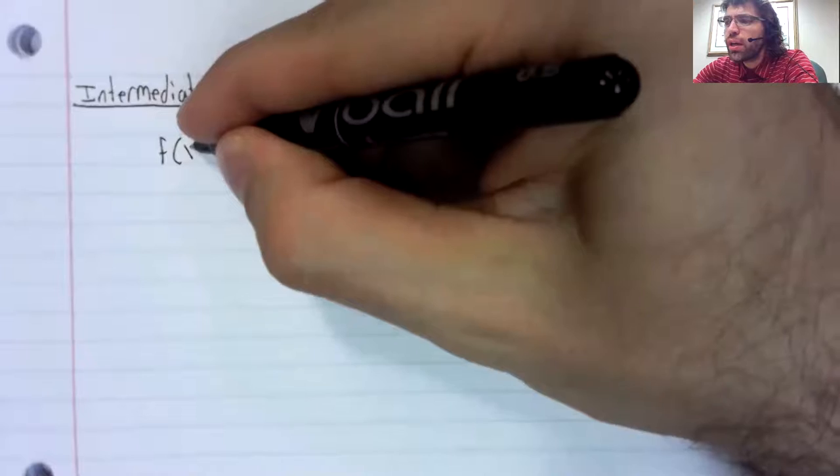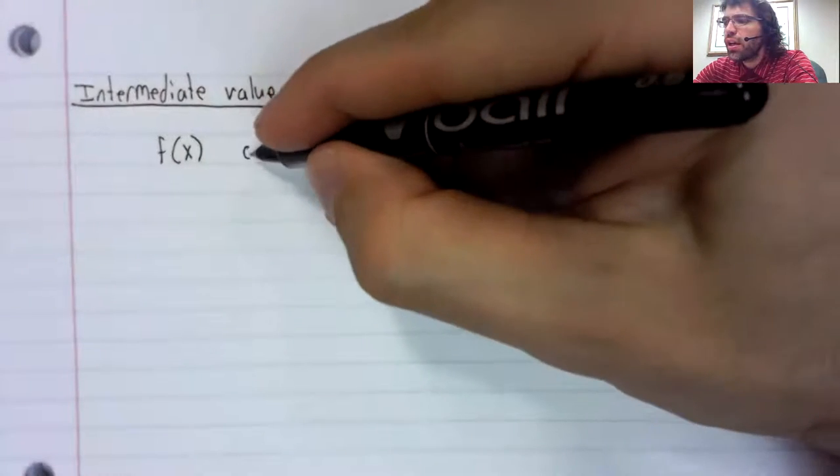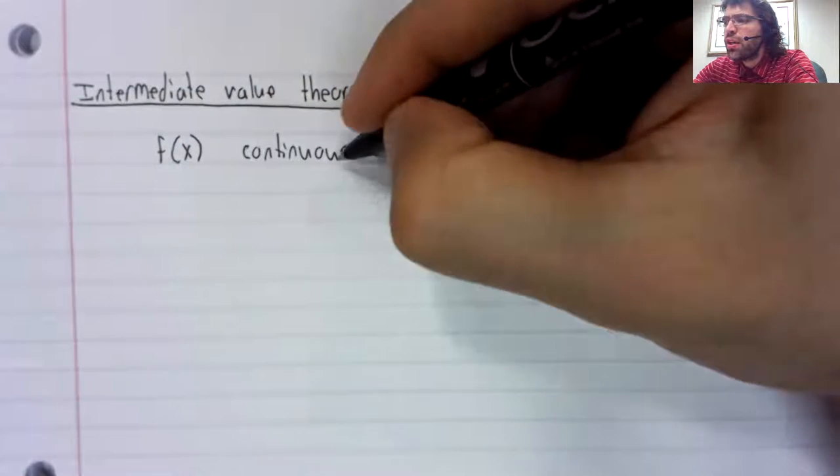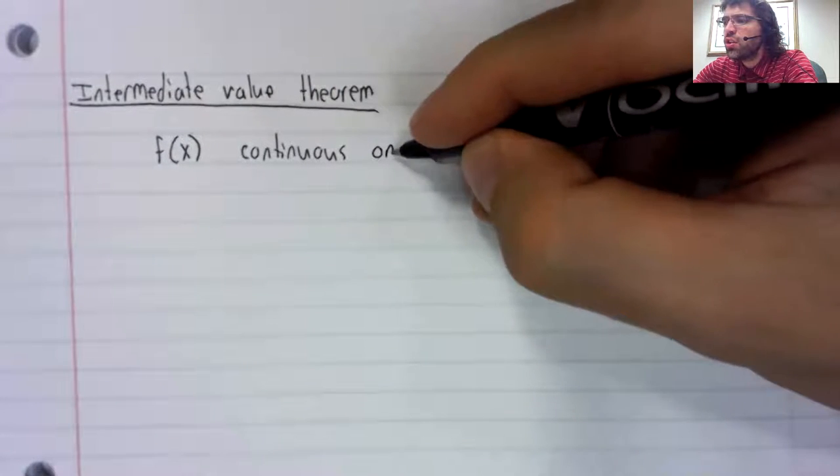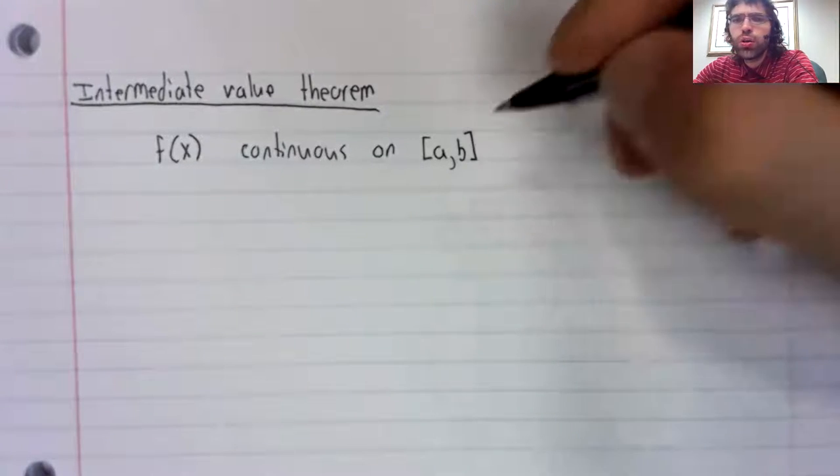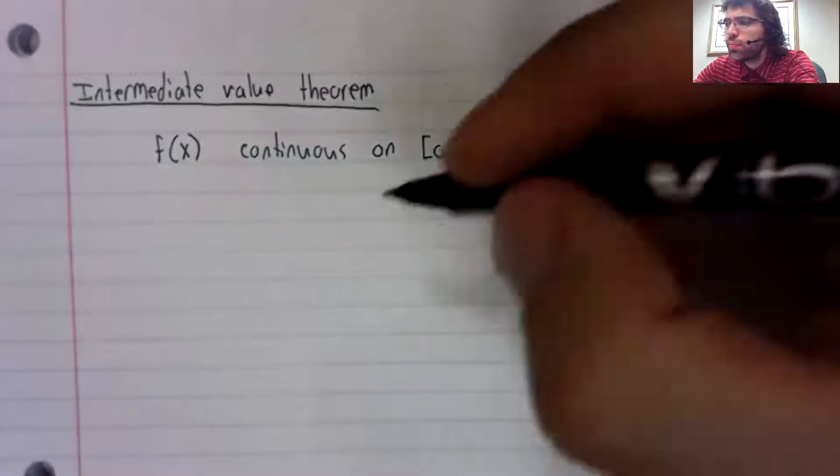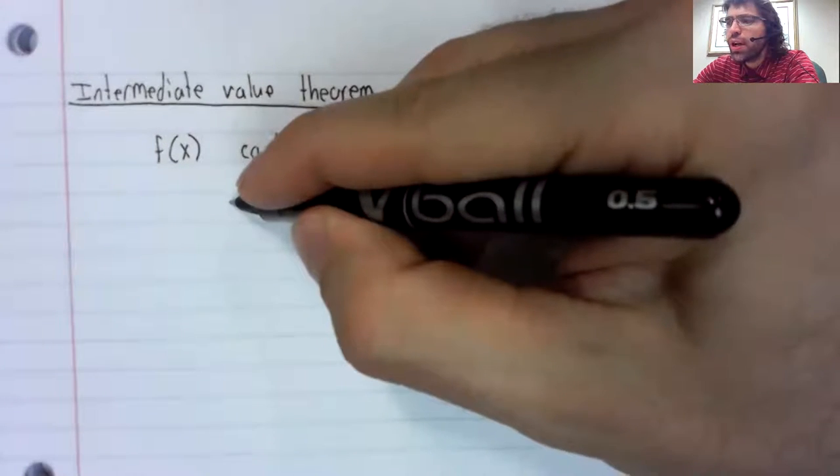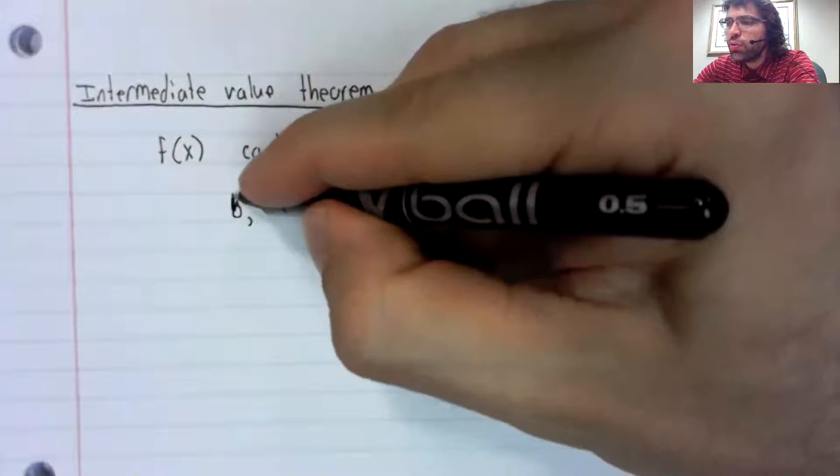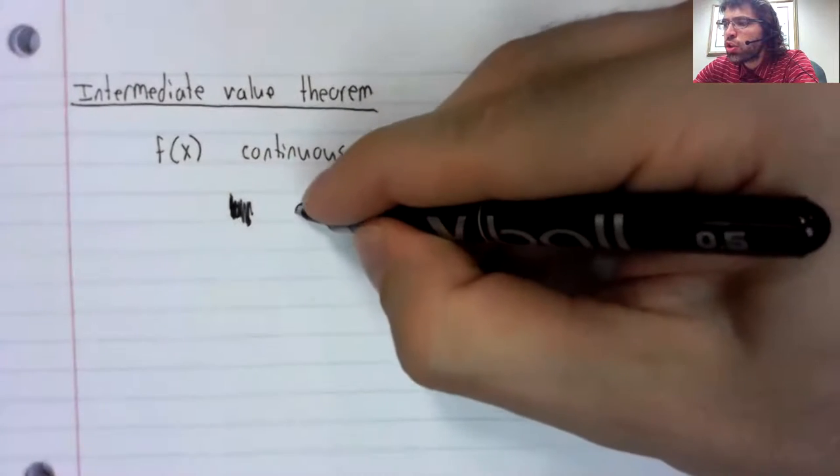Suppose you have some function f of x, and it's continuous on a closed interval. And suppose you have some number... already used b... some number q.